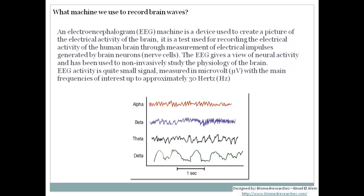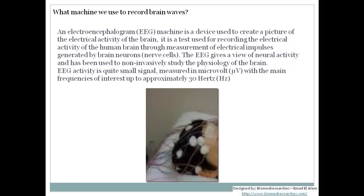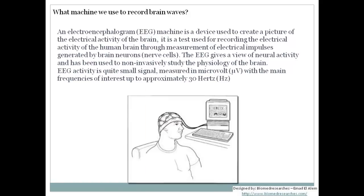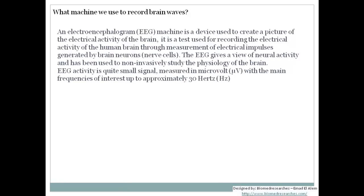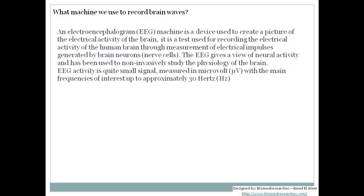The EEG test is a non-invasive test, meaning we don't hook the electrodes directly to the brain. We connect the electrodes to the patient's scalp, and from there the electrodes transmit the signal to the amplifier. The EEG signal is a very small signal — typically in microvolts — so it must be amplified to make it readable, then sent to a display device where doctors can view and report it.